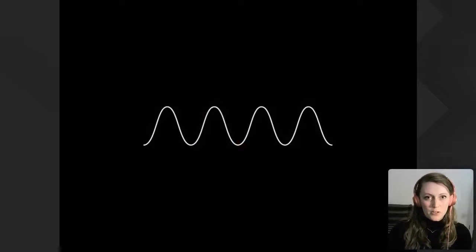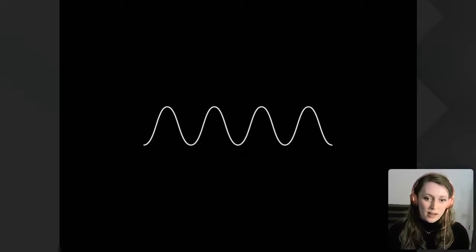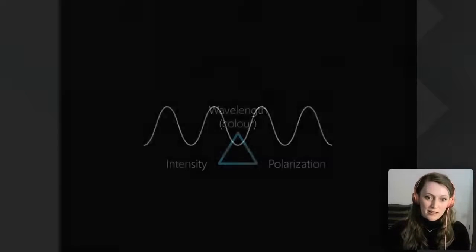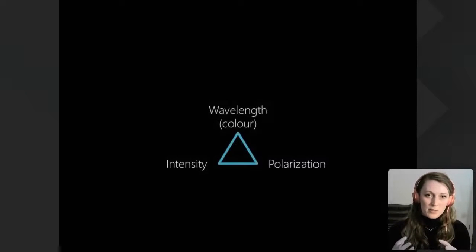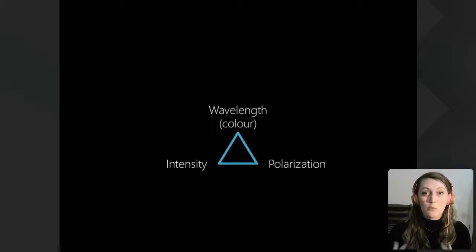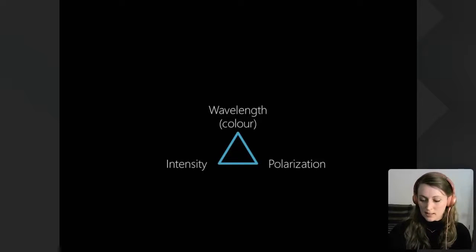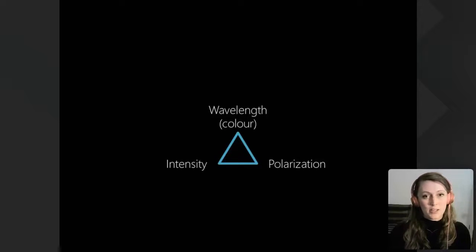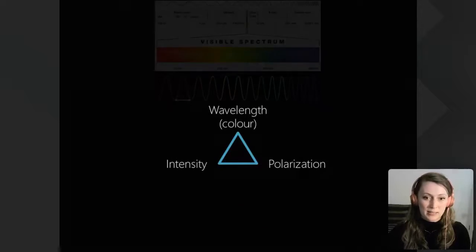I wanted to start off by talking about some of the properties of light. If we imagine light as a simple wave, there are three major aspects that animals could pick up on — bits of information embedded in that. These things are wavelength, polarisation, and intensity.